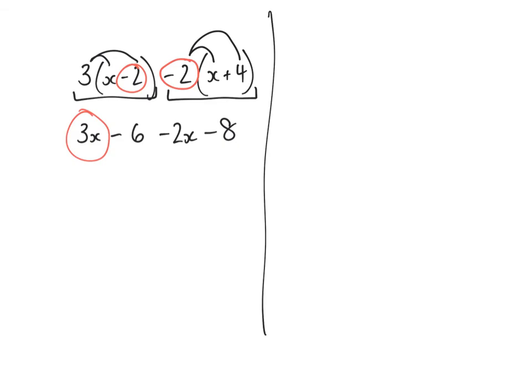Now I can join them together. So we've got 3x subtract 2x. You must look at the sign in front of each number. 3x subtract 2x is just 1x. I've also got negative 6 subtract 8. Negative 6 subtract 8 is negative 14. So that's the answer to that question.